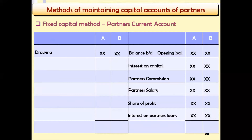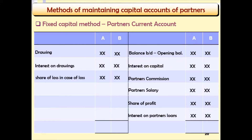Interest on drawings is also recorded on the debit side. In case the partnership business makes losses, the share of losses is recorded there as well. Lastly, we have the closing balance, or balance carried down, and then we balance off the account. That makes the Partner's Current Account.